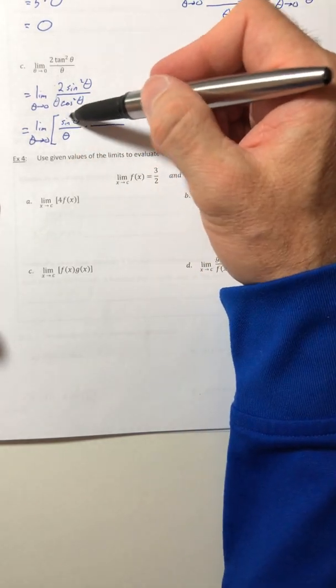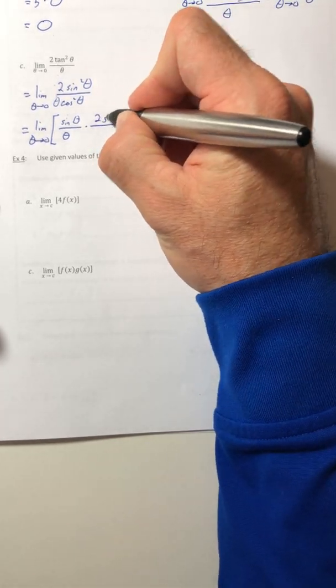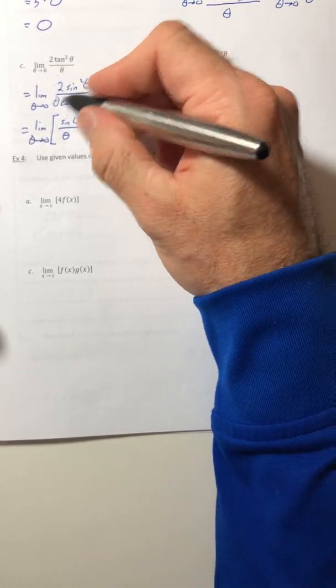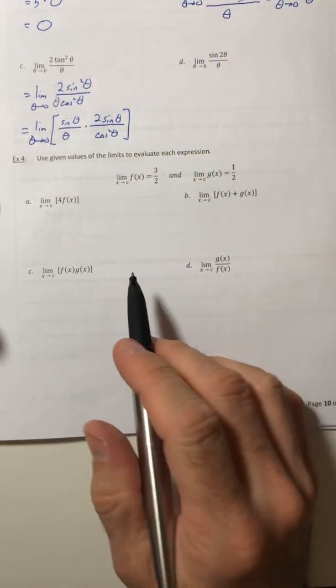So I just need one of the sines and I also need that theta. So if I split off a sine of theta over theta from this fraction, I have another sine and I have a cosine squared that are left over.